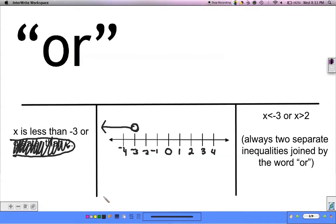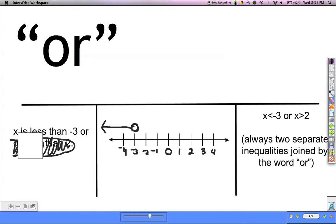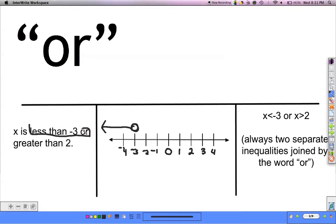So now that that's graphed, the greater than 2 part, because now I'm looking at x is greater than 2.